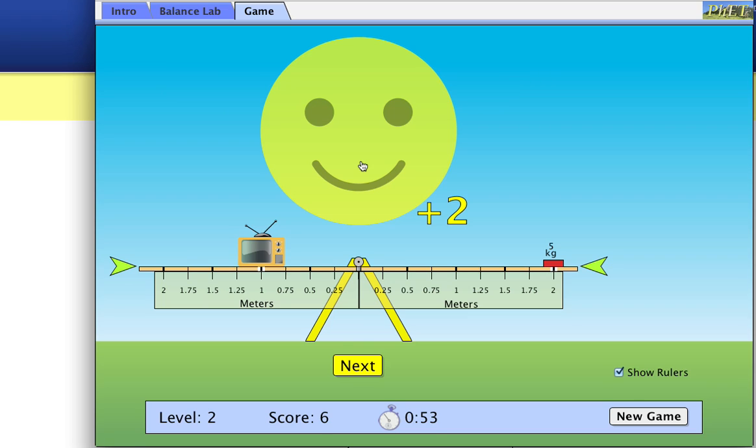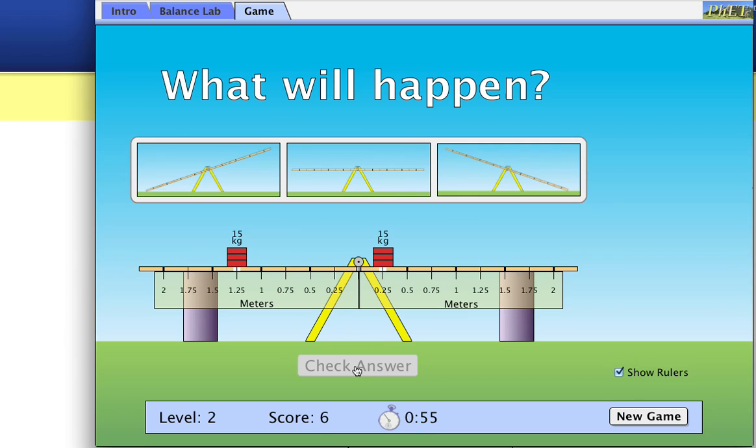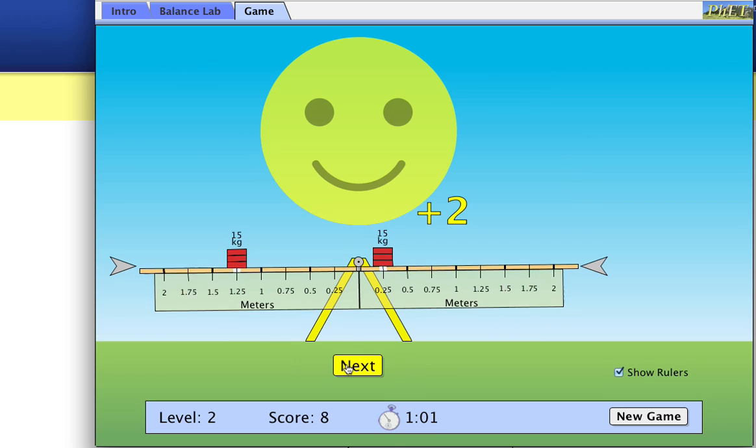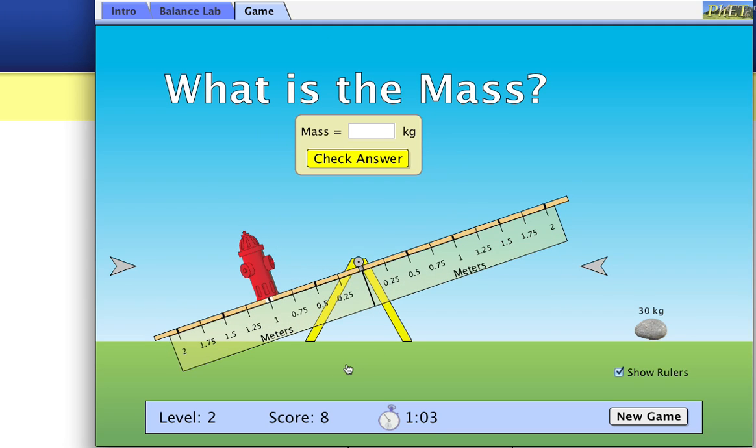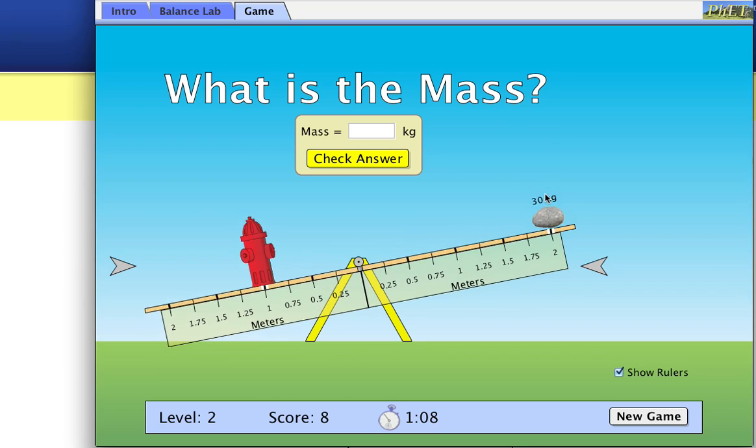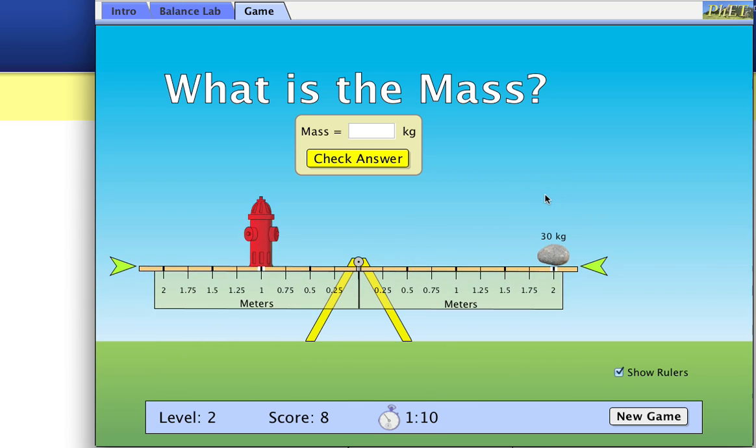They want to know what's going to happen. Well, this one's a bigger distance, so it should torque counterclockwise, and it does. Okay, they want the mass of the fire hydrant, so I take this rock. I try finding it when I got lucky on the first try. Okay, it's twice the distance.